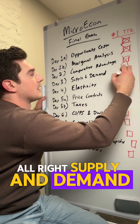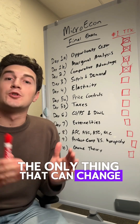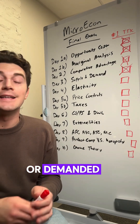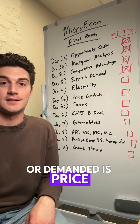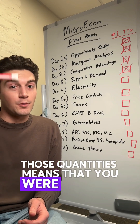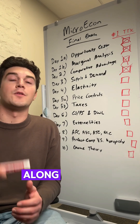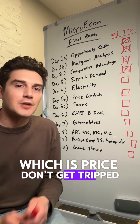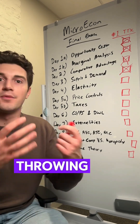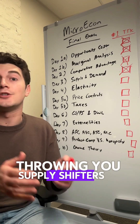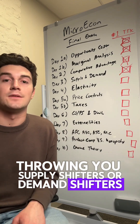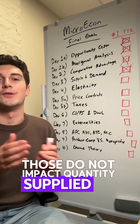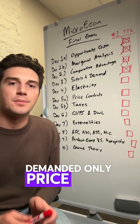Supply and demand. The only thing that can change quantity supplied or demanded is price, because to change those quantities means you're moving along the y-axis, which is price. So don't get tripped up on them throwing you supply shifters or demand shifters — those do not impact quantity supplied or demanded. Only price does.